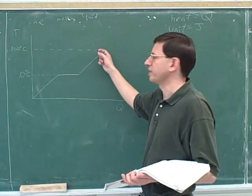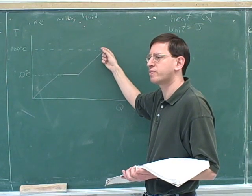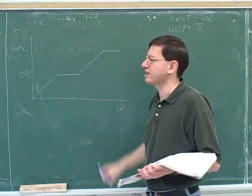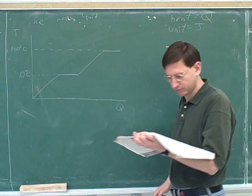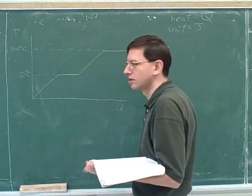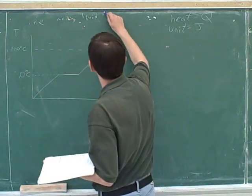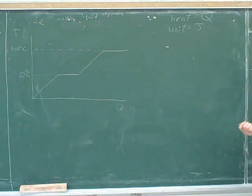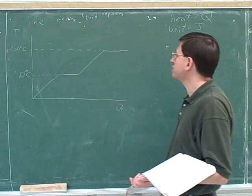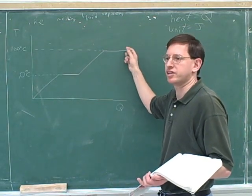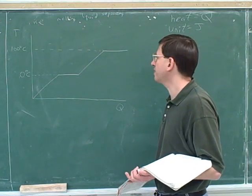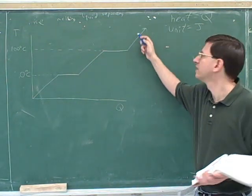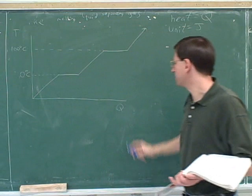What's going to happen to the graph at 100 degrees Celsius? The water starts vaporizing, and while it's vaporizing, the temperature doesn't change. While the heat is vaporizing it, the temperature is not changing. But eventually you get to the point where there's no water left — only water vapor. Then the temperature is free to change again, and it can keep increasing indefinitely if you continue adding more heat.